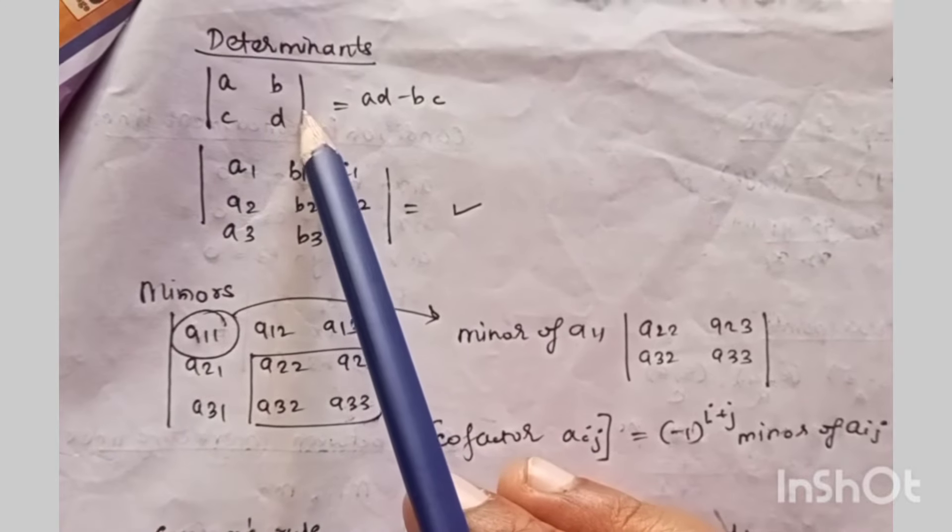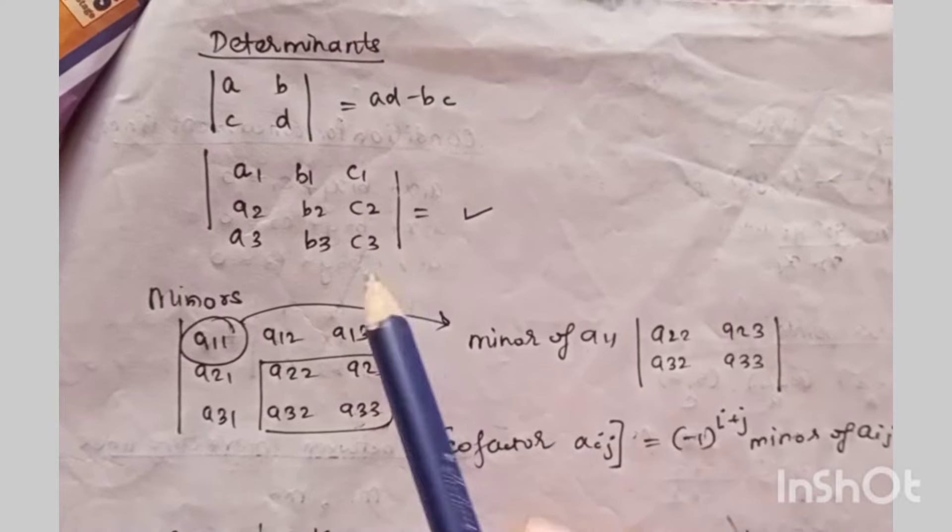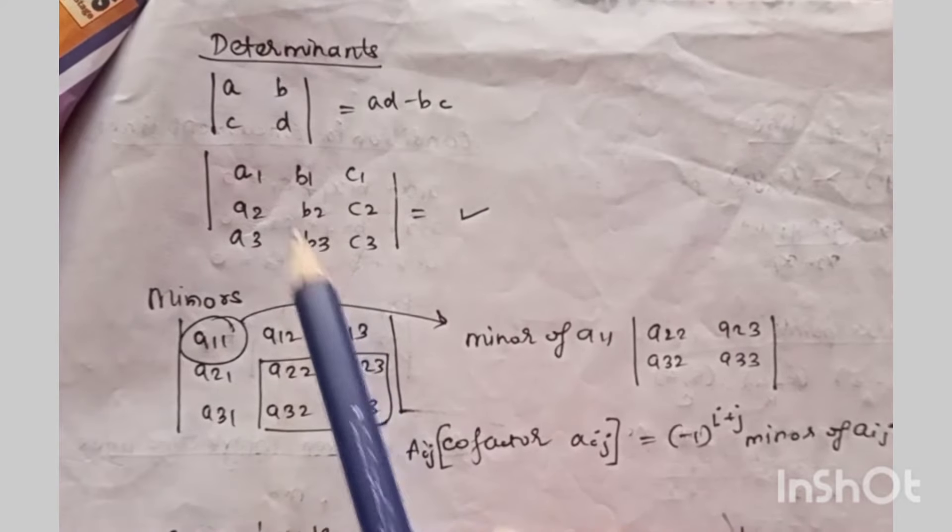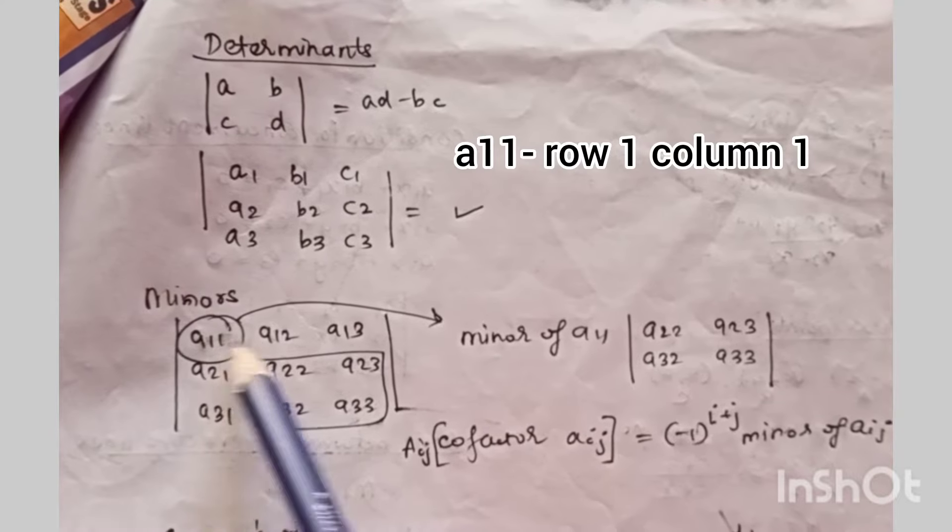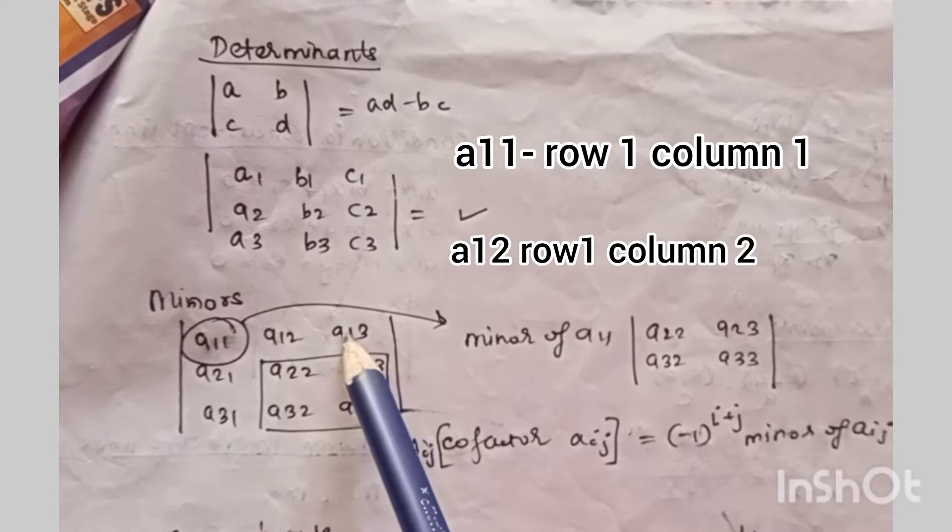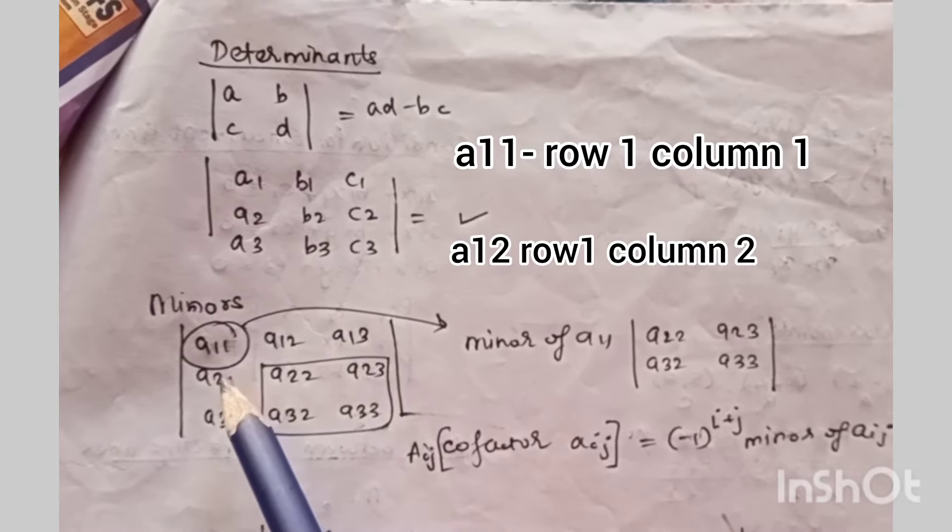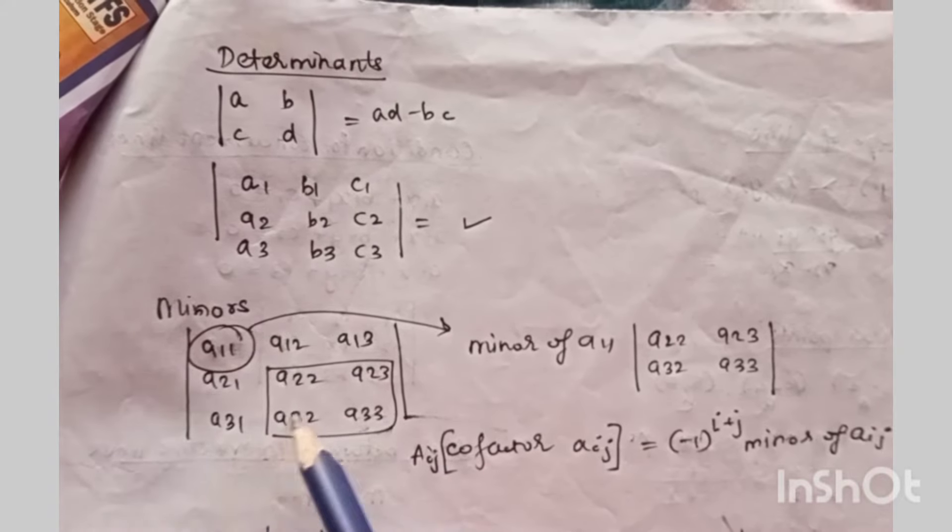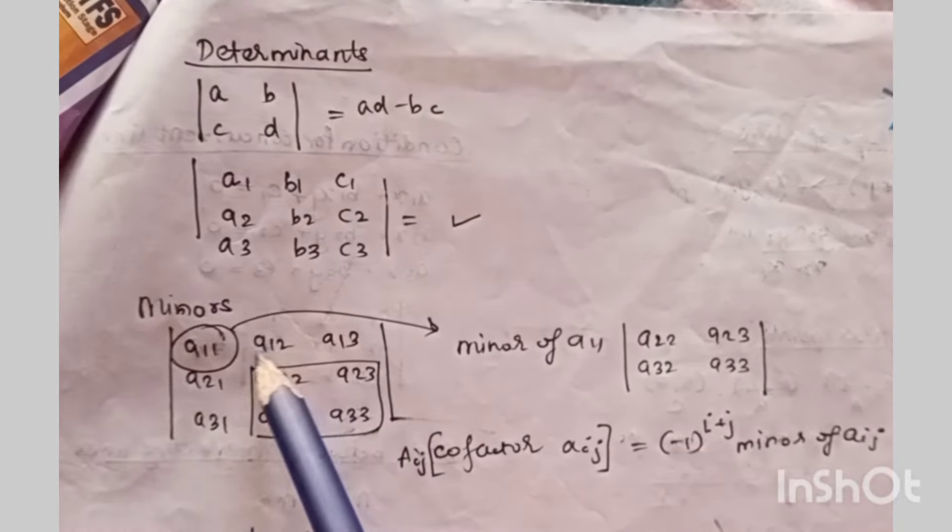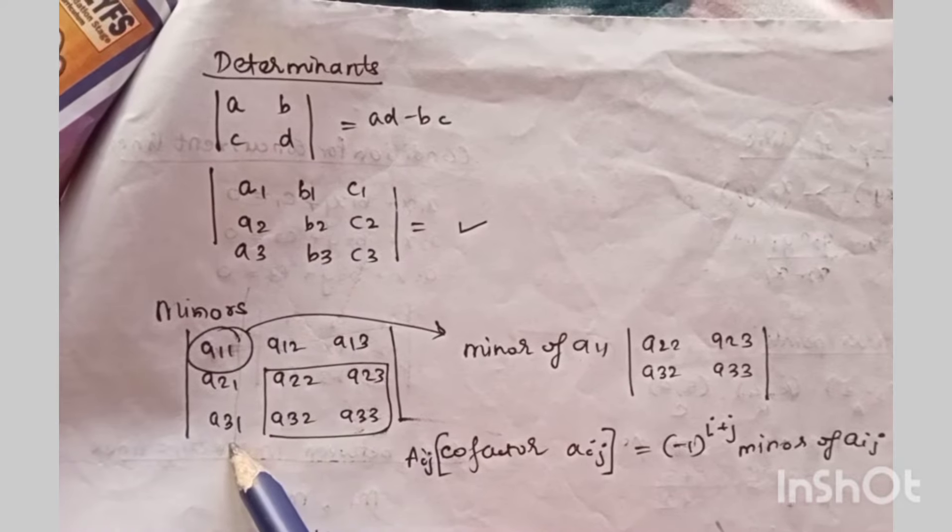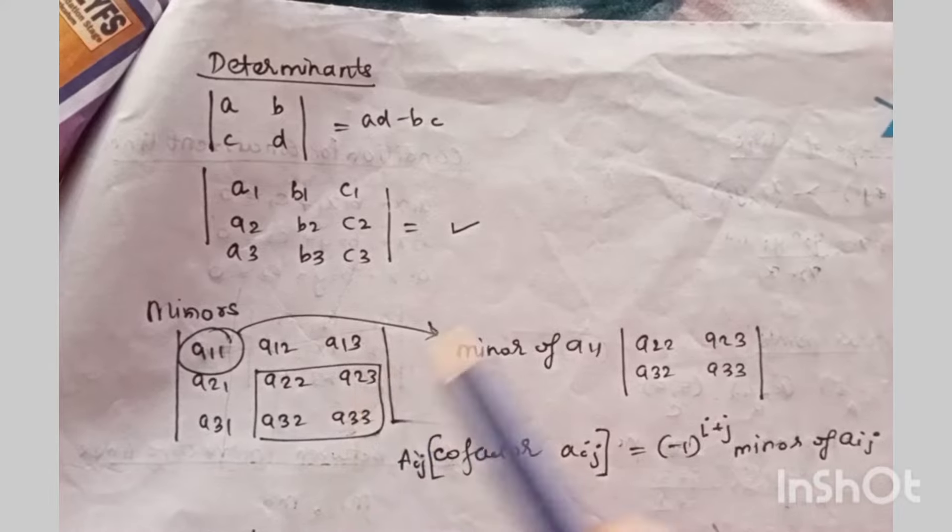First of all you need to know how to find determinant of 2x2 and 3x3. After that only you have to practice the other concepts. A11 means first row and first column, A12 is first row second column and similarly the remaining elements of the determinant. If you want to find minor A11 that means you have to remove first row and first column and write remaining elements.